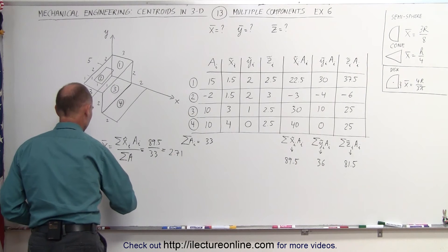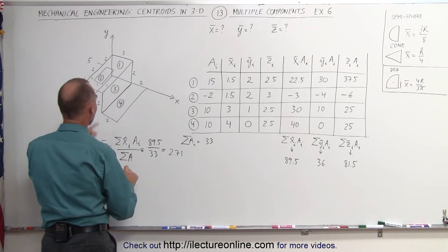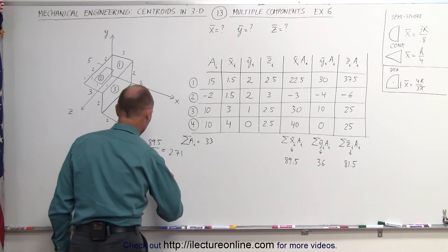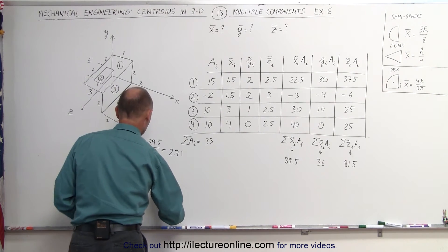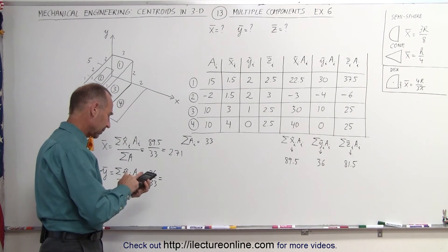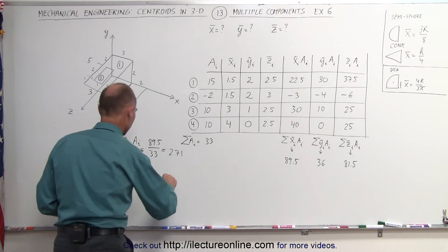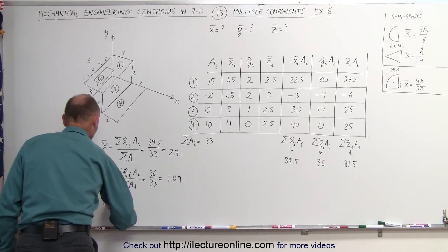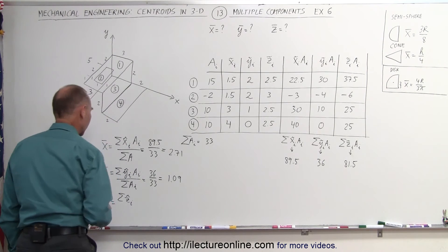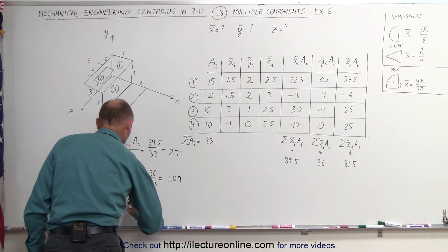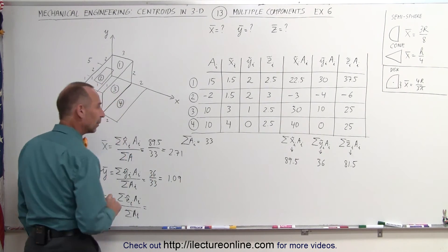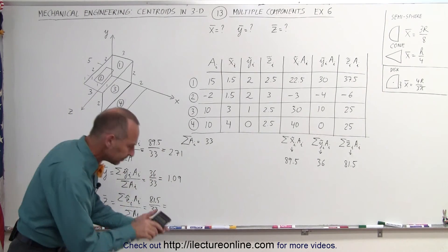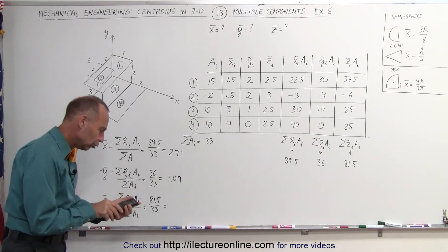To find the y-coordinate of the centroid, that equals the sum of all the y-coordinates of each individual piece multiplied by the area of each piece, divided by the sum of the total area. That would be 36 divided by 33, which equals 1.09. Finally, the z-coordinate of the centroid equals the sum of all the z-coordinate products divided by the total area, which is 81.5 divided by 33, giving us 2.47.